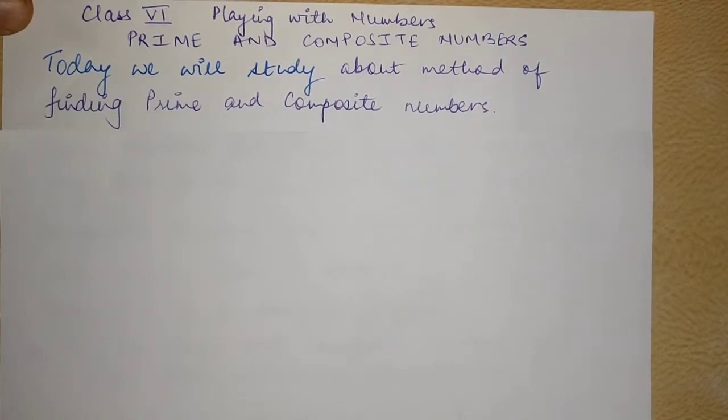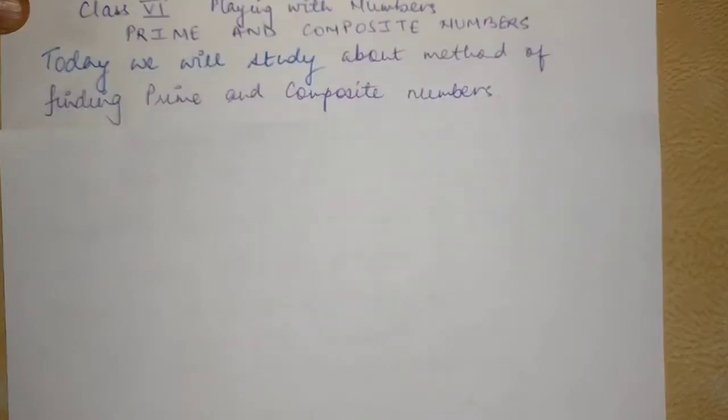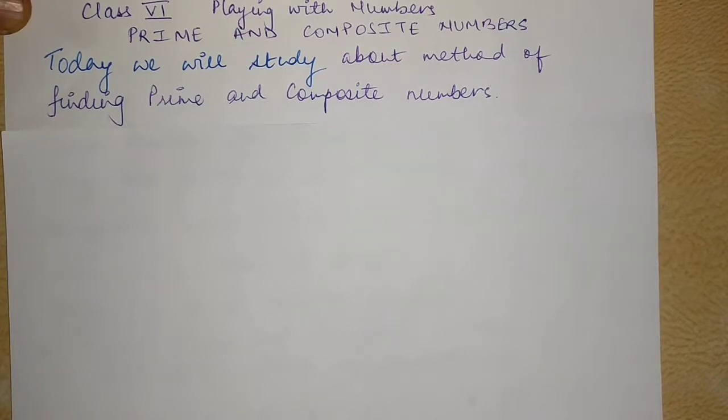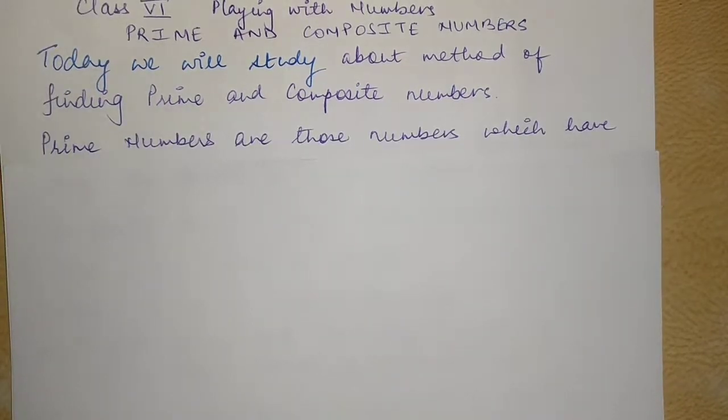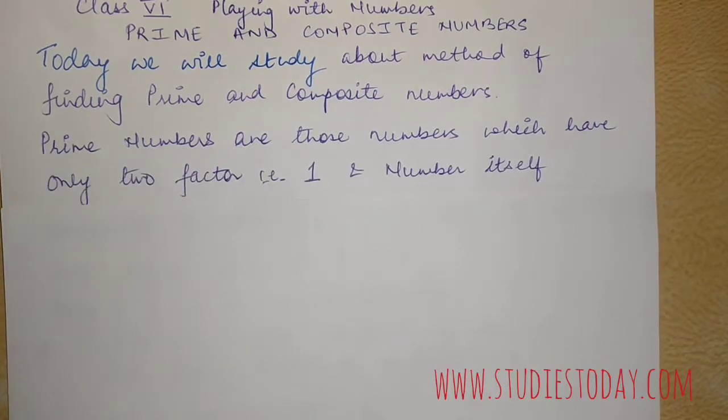Today we will study the method of finding the prime and composite numbers. First we will understand what are prime numbers. Prime numbers are those numbers which have only two factors, one and the number itself, and we cannot find any other factor which is the factor of the prime number.